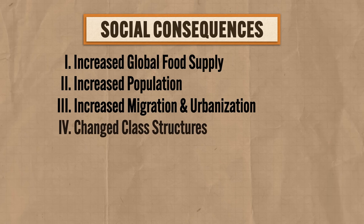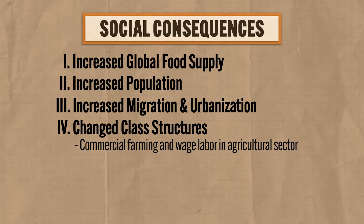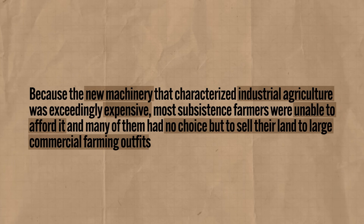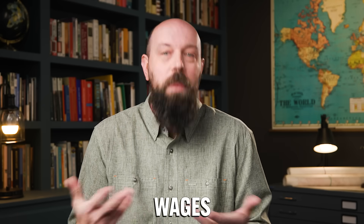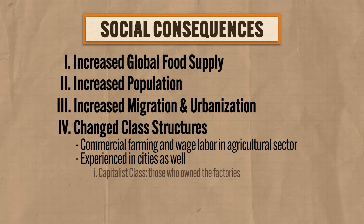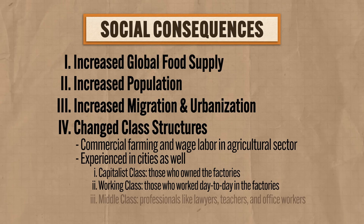The fourth major effect was the growing change in class structures. In the agricultural sector, we saw the rise of commercial farming and wage labor. Because new machinery was exceedingly expensive, most subsistence farmers couldn't afford it and many had no choice but to sell their land to large commercial farming outfits, then be hired back as wage laborers. In the cities, those who owned the factories were known as the capitalist class, while those who worked day-to-day were the working class — essentially the rich and the poor, a growing gap created by industrialization. By the middle of the 19th century, a new middle class arose — professionals like lawyers, teachers, and office workers. People began identifying strongly with their class rather than a place, as members of each class lived near each other and shared the same concerns.